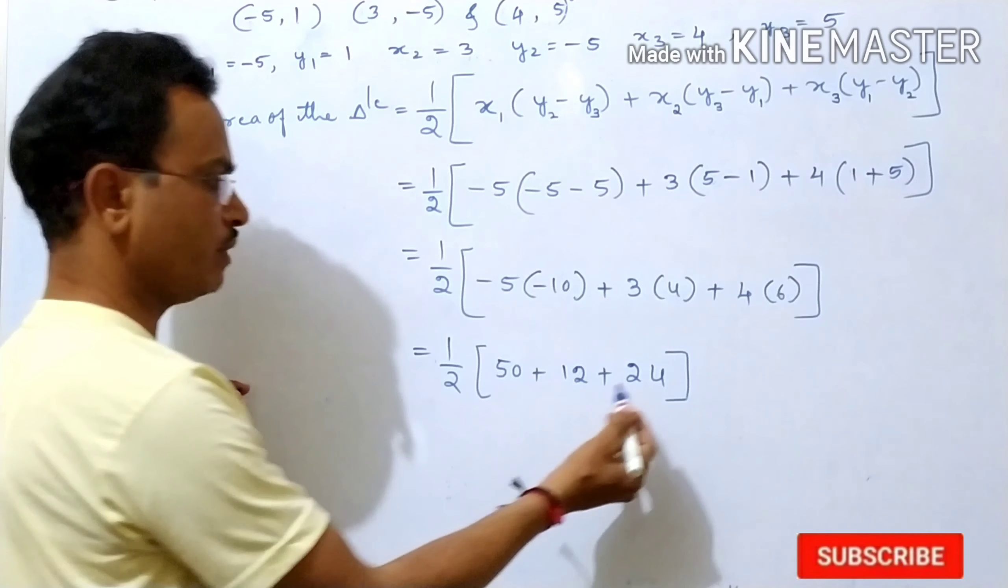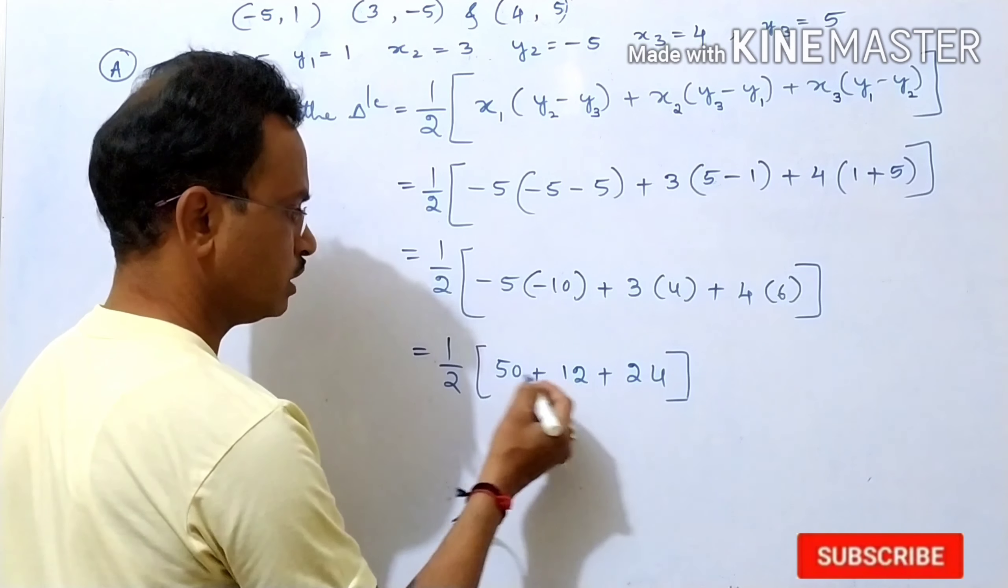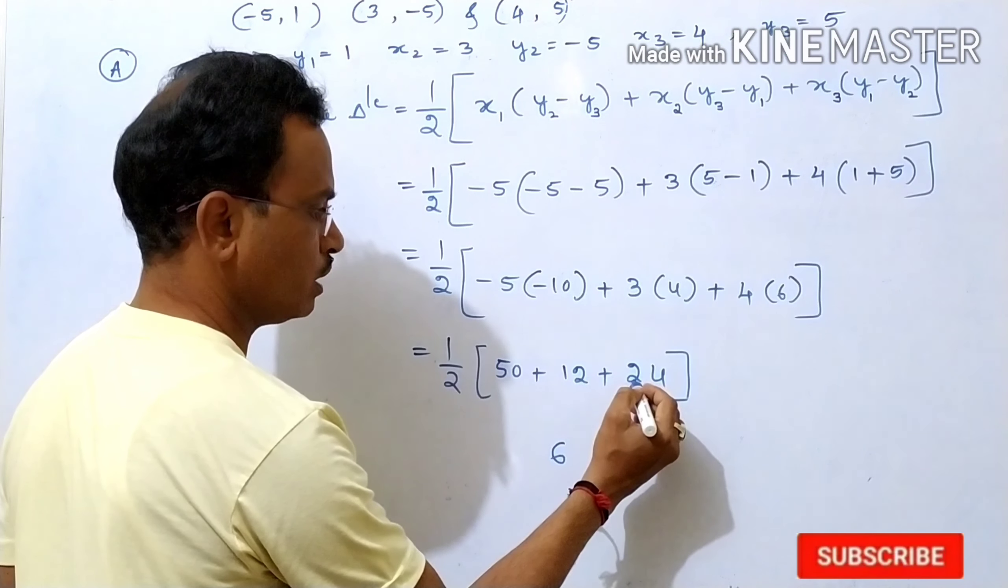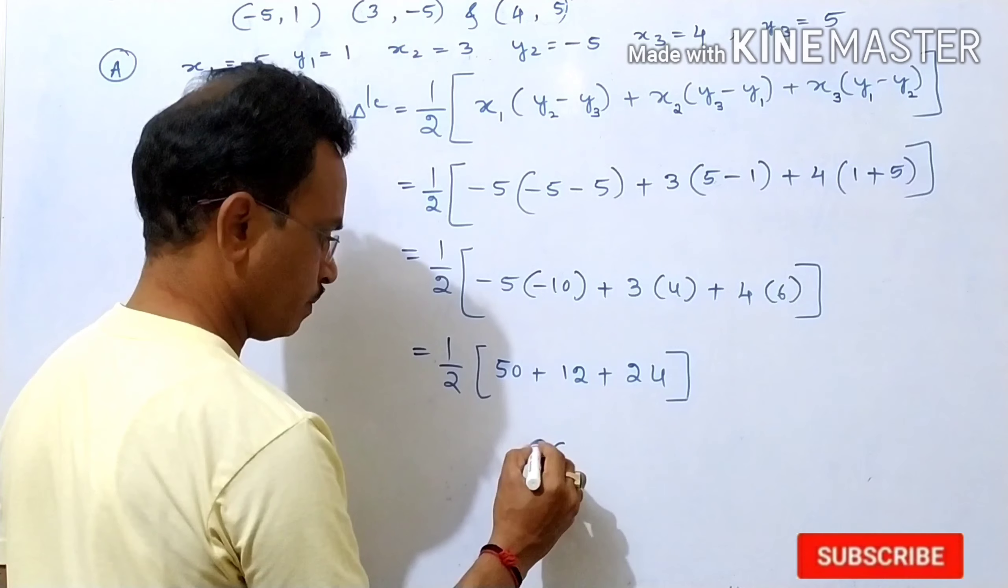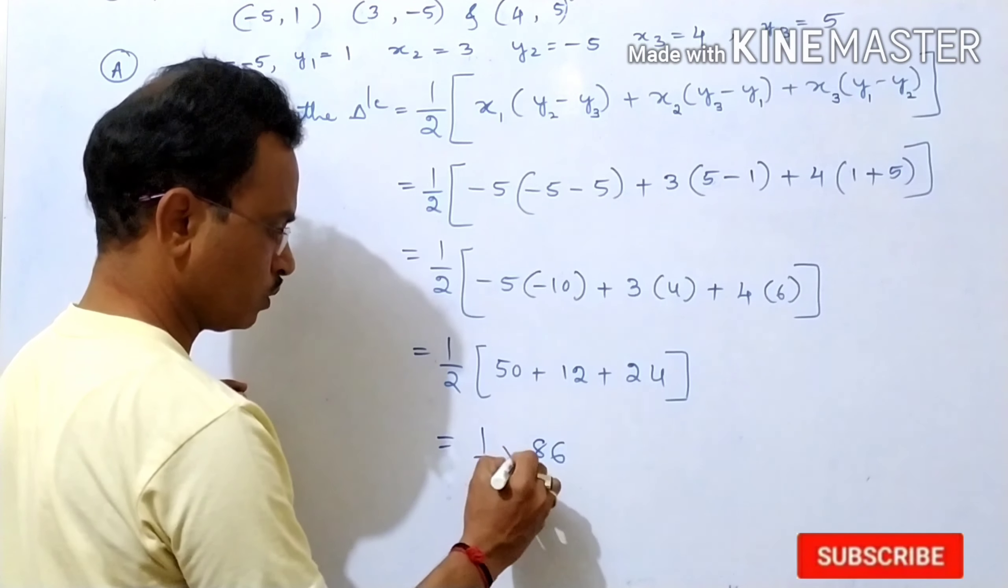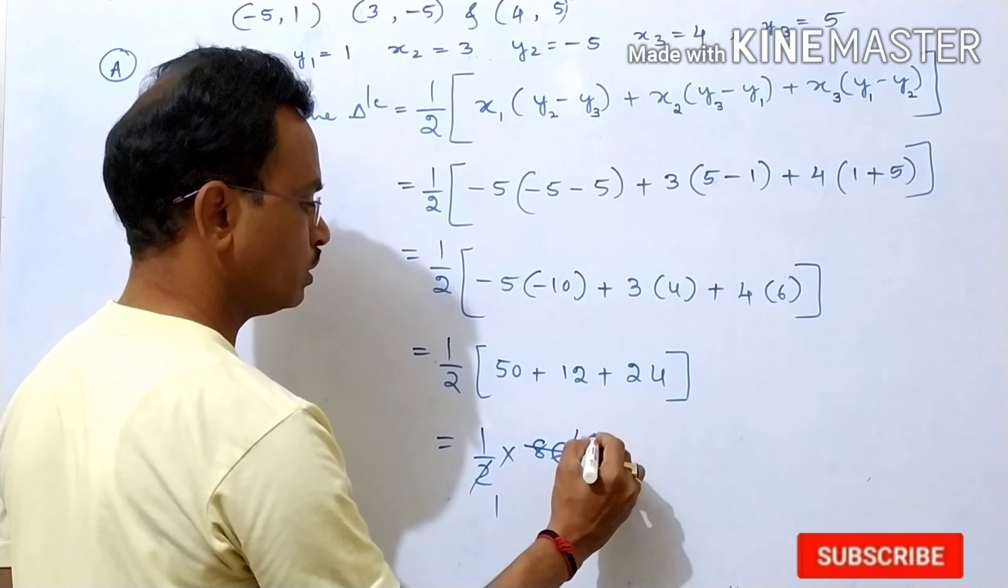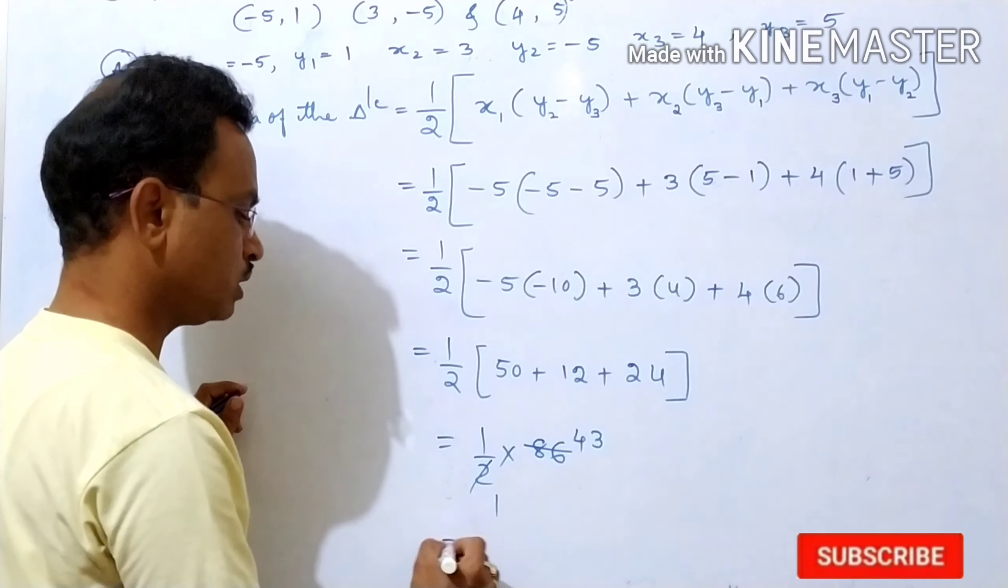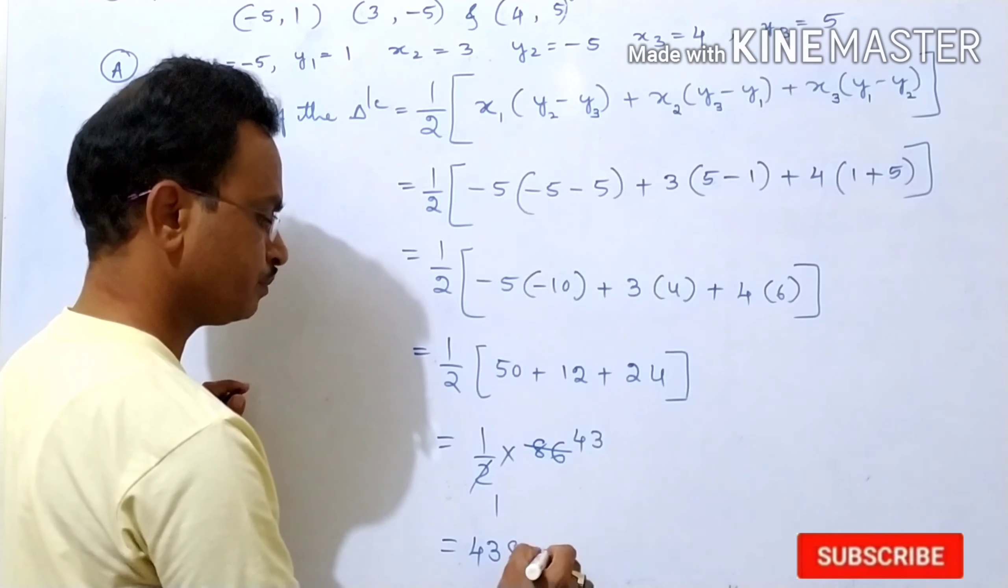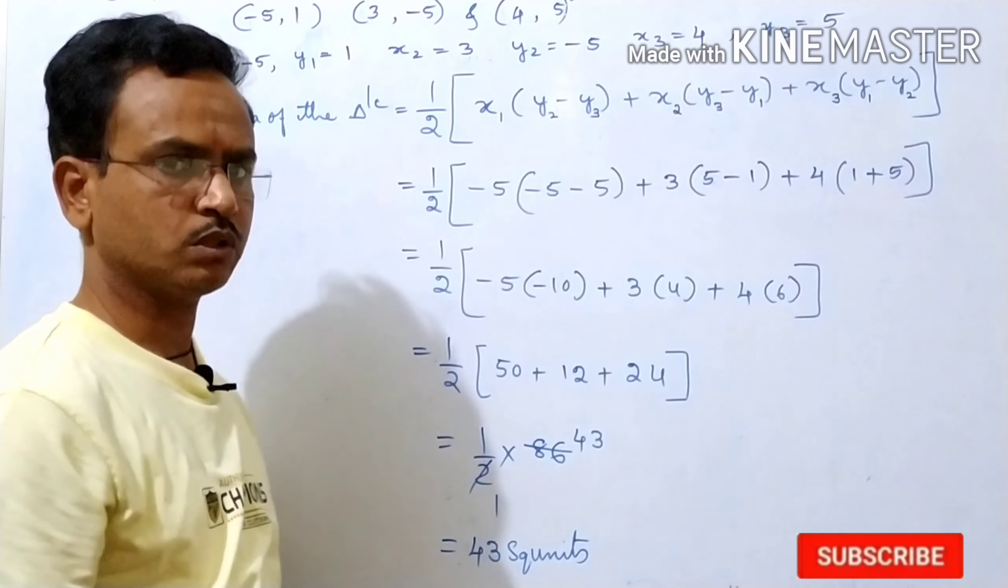Then add all these 3 values. 4 plus 2 is 6. First you write 6 here, 6 plus 0 is 6, then 5 plus 1 is 6, 6 plus 2 is 8. Then this 1 by 2. Reduce it to 1's is 12, 4's is 8, 2 3's is 6. This is equal to 43 square units. That means area of this triangle is 43 square units.